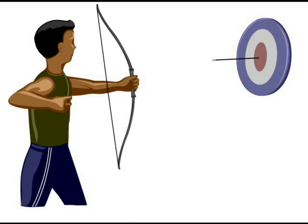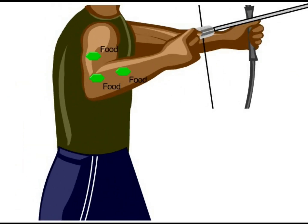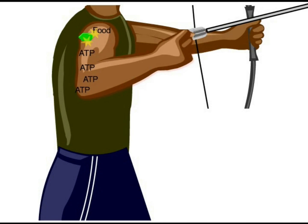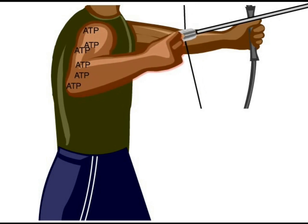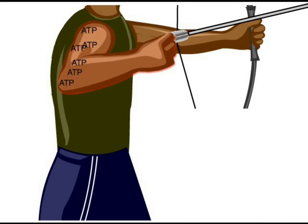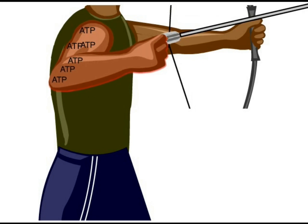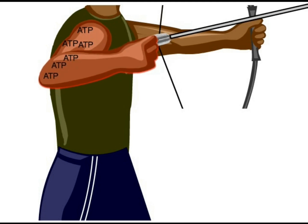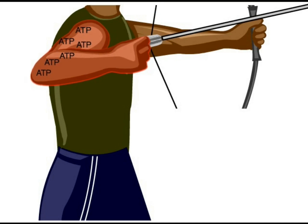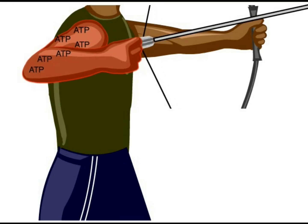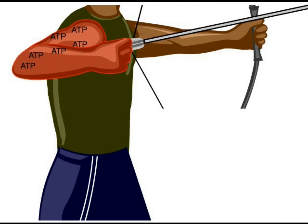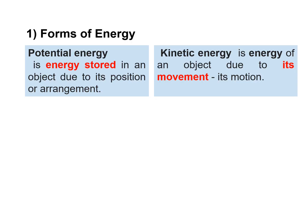Where do our muscles get energy to perform work, such as pulling back a bowstring? Our bodies use chemical energy from food to perform work. Chemical energy is a form of potential energy. When your body breaks down food molecules, the stored potential energy can be converted to kinetic energy through cellular respiration. Using oxygen, cellular respiration converts chemical energy from food into ATP, with water (H₂O) and carbon dioxide (CO₂) as byproducts. The potential energy of ATP can then be converted to kinetic energy to do useful work, but the heat energy generated in the process cannot be used to do work.